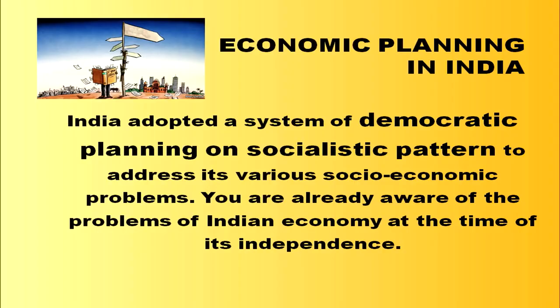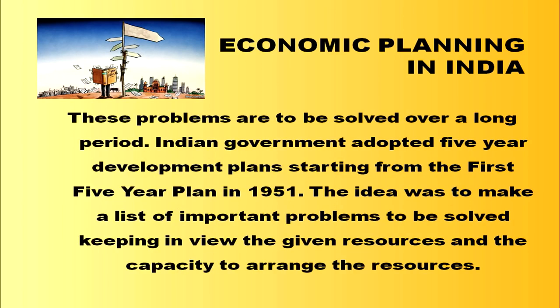India adopted a system of democratic planning on a socialistic pattern to address its various socio-economic problems. These problems are to be solved over a long period. The Indian government adopted five-year development plans starting from the first five-year plan in 1951. The idea was to make a list of important problems to be solved keeping in view the given resources and the capacity to arrange them.